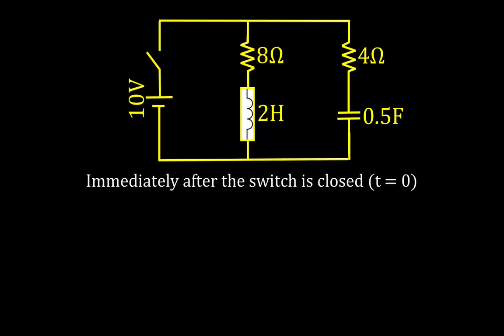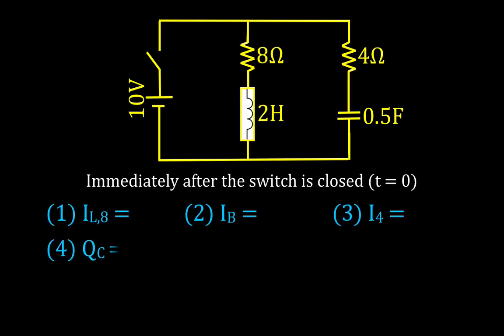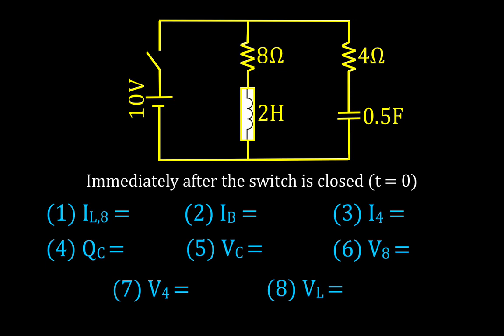We're going to look at this circuit and analyze it for two different points in time, and we're going to answer the following eight questions — current, voltage, and charge for the components immediately after the switch has been closed, which we call time equals zero, and after the switch has been closed for a long time.